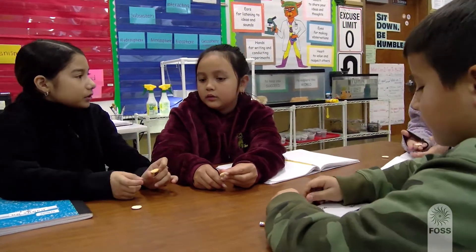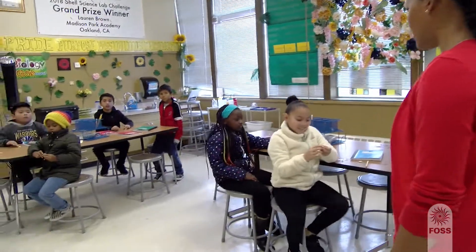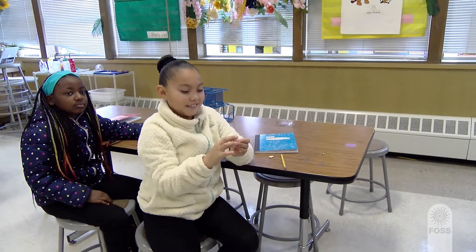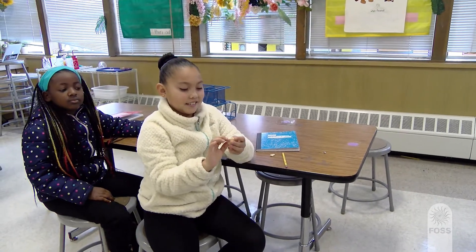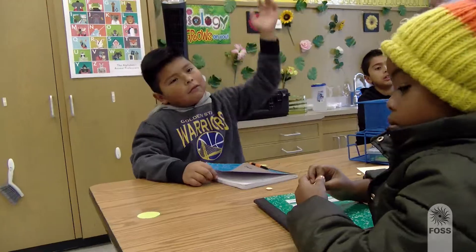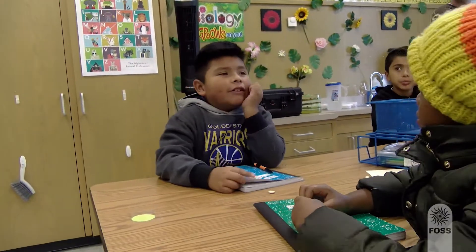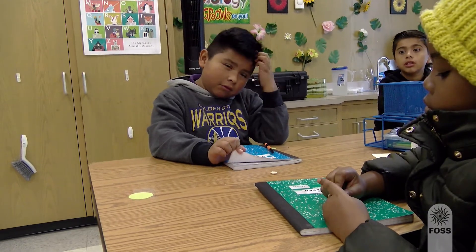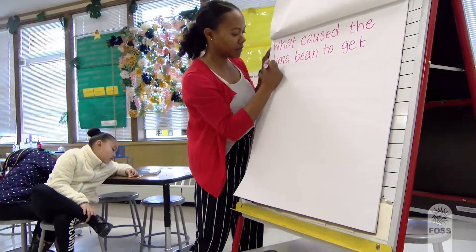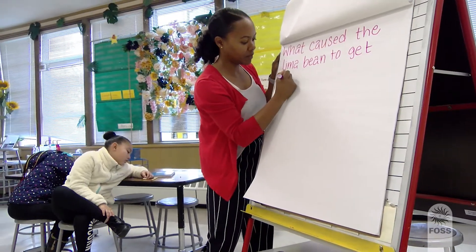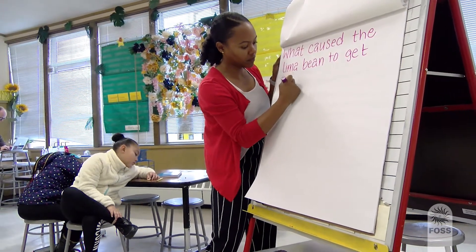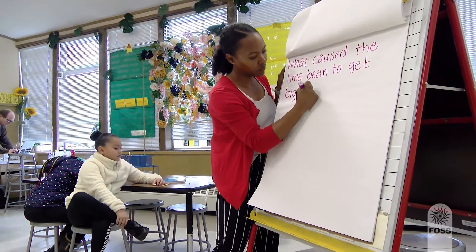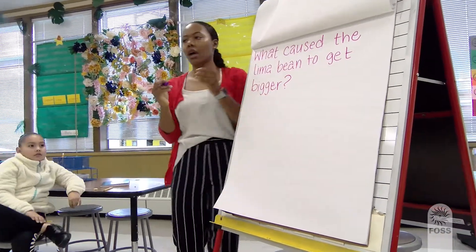Student: It has circles. I like this part coming off. Teacher: Why is that part coming off? Why did it get softer and why did it get bigger? The teacher modifies the student question — why did it get bigger — to use as the focus question for the class.